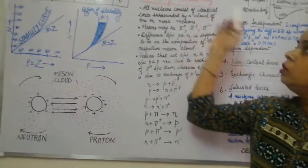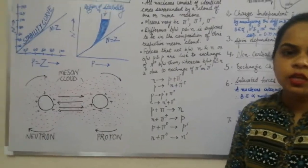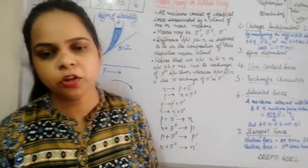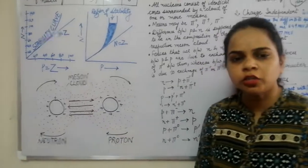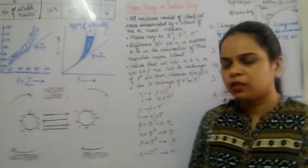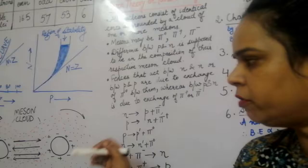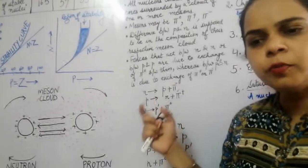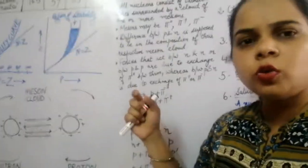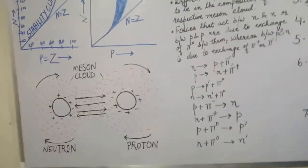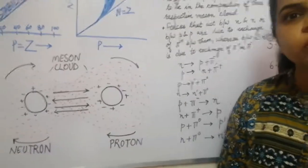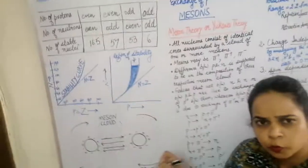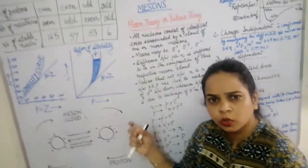The next topic is nuclear forces. We know that some certain force is responsible for the stability of the nucleus. If only gravitational force or Coulombic forces were present, the nucleus would not be stable — positively charged protons would produce repulsion, and since the neutron has no charge there would be no interaction between a proton and a neutron. So there must be some force binding proton-proton, neutron-neutron, and proton-neutron together inside the nucleus.